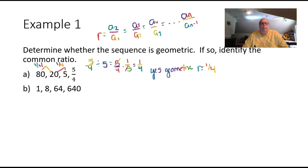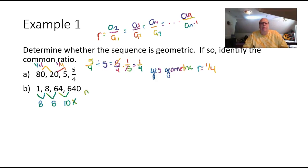For part b, we have 1, 8, 64, 640. Dividing: 8 divided by 1 gives 8, and 64 divided by 8 gives 8. This looks geometric, but we must check the last pair: 640 divided by 64 gives 10. They don't all equal 8, so part b is not geometric.